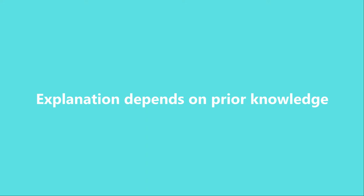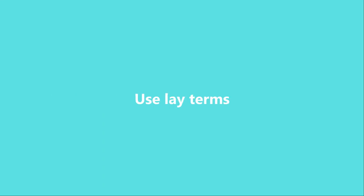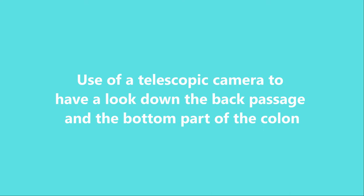For a patient with a great degree of knowledge of the procedure, you don't need to explain as much as for a patient who doesn't know anything about a sigmoidoscopy. It is important to explore the patient's ideas, concerns, and expectations. Once you have gathered a brief history, you can explain what the procedure involves. Use lay terms and avoid jargon. A sigmoidoscopy is a test that involves the use of a telescopic camera to have a look down the back passage and the bottom part of the colon.